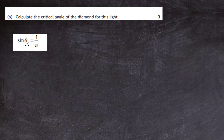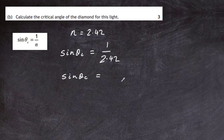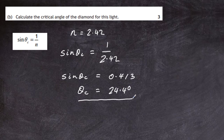Part b: calculate the critical angle of the diamond for this ray of light. From the data sheet, sin θc equals 1 divided by the refractive index n. We know n equals 2.42 for diamond, so sin θc equals 1 divided by 2.42, which gives 0.413. Taking the inverse sine, θc equals 24.4 degrees — three significant figures. A simple equation that gains you three marks.